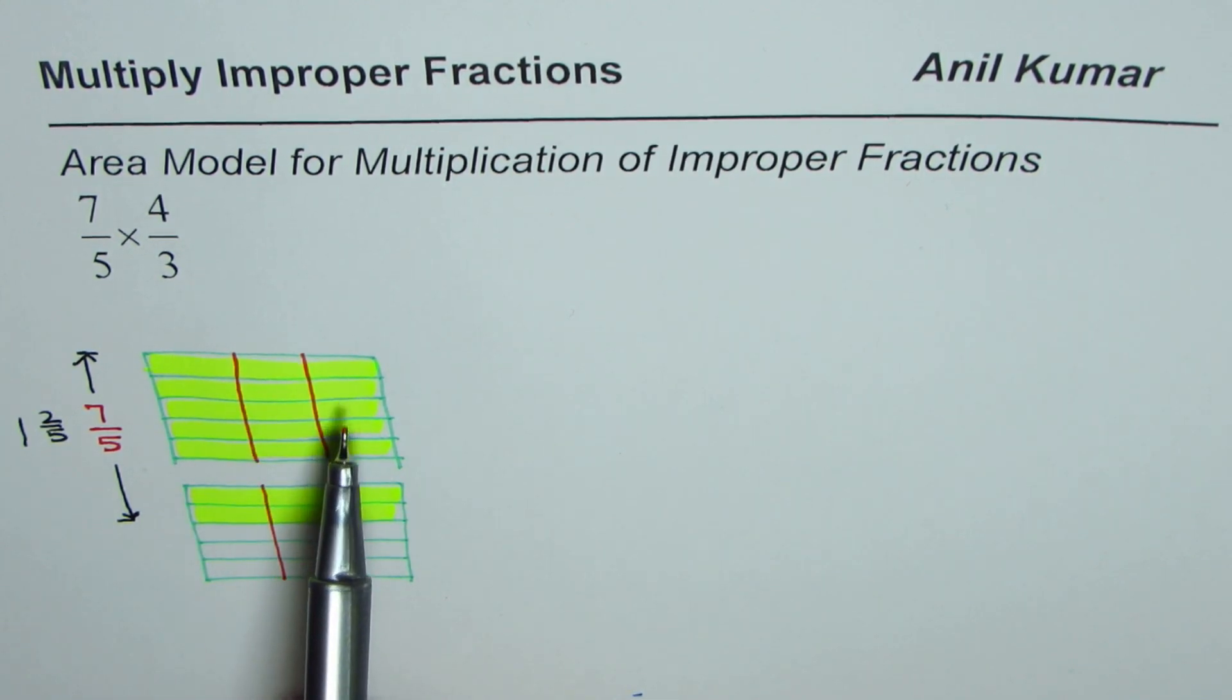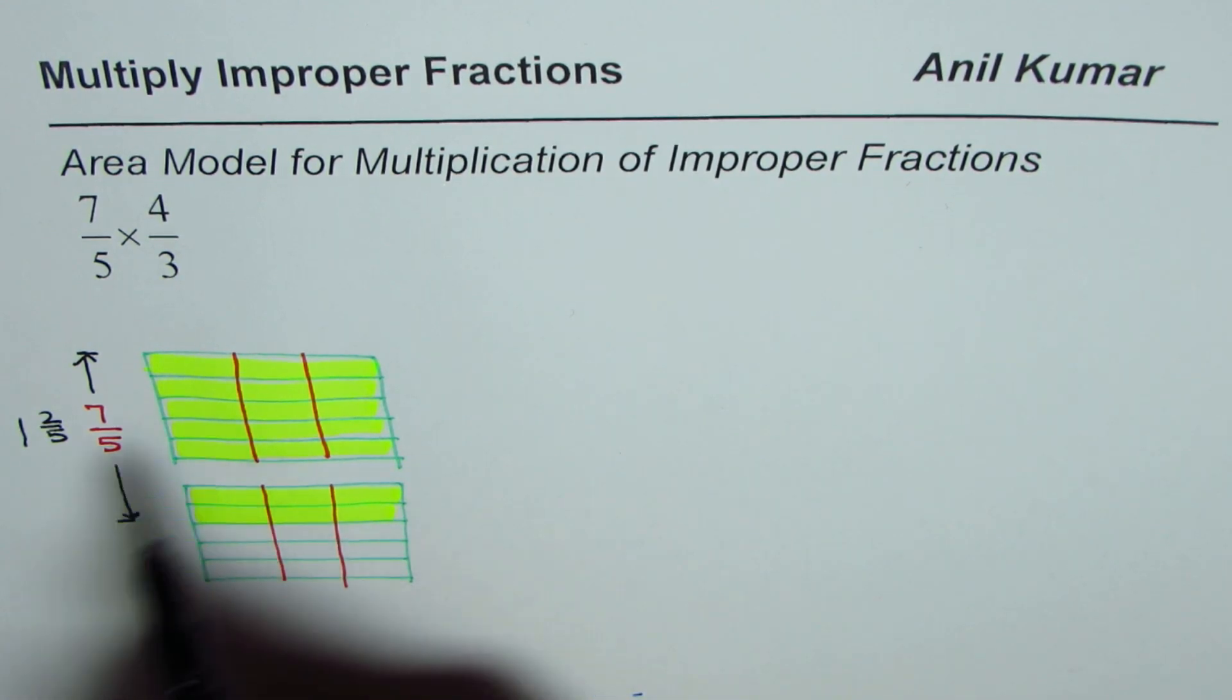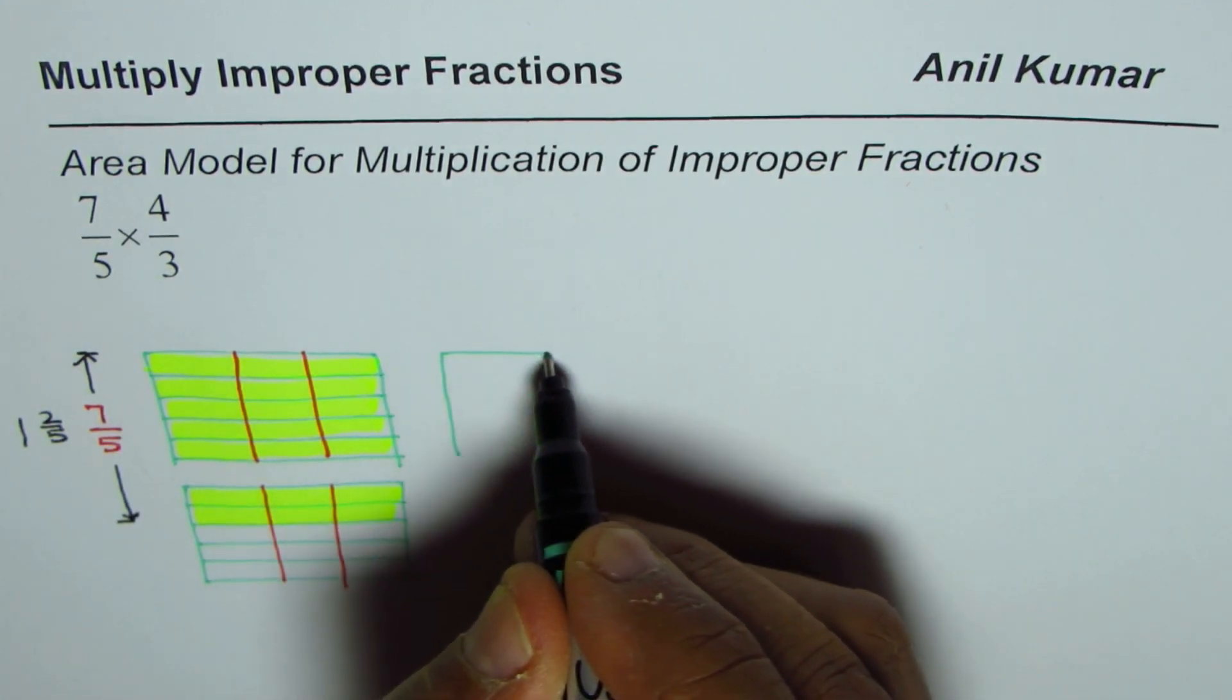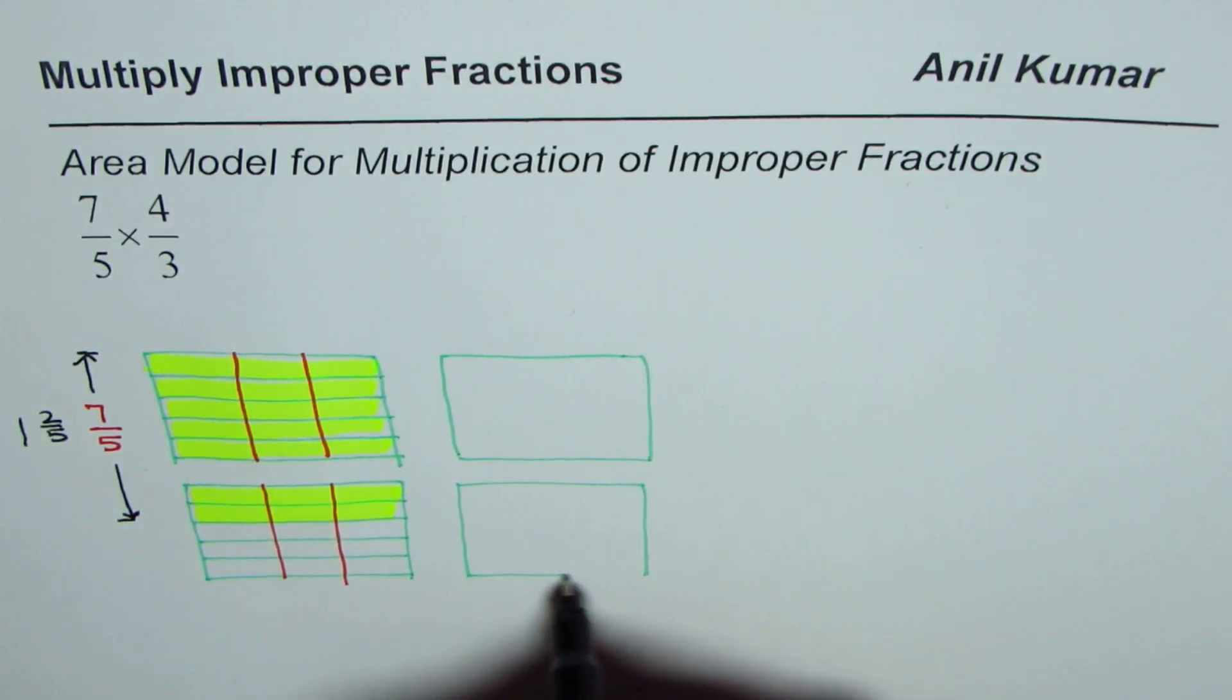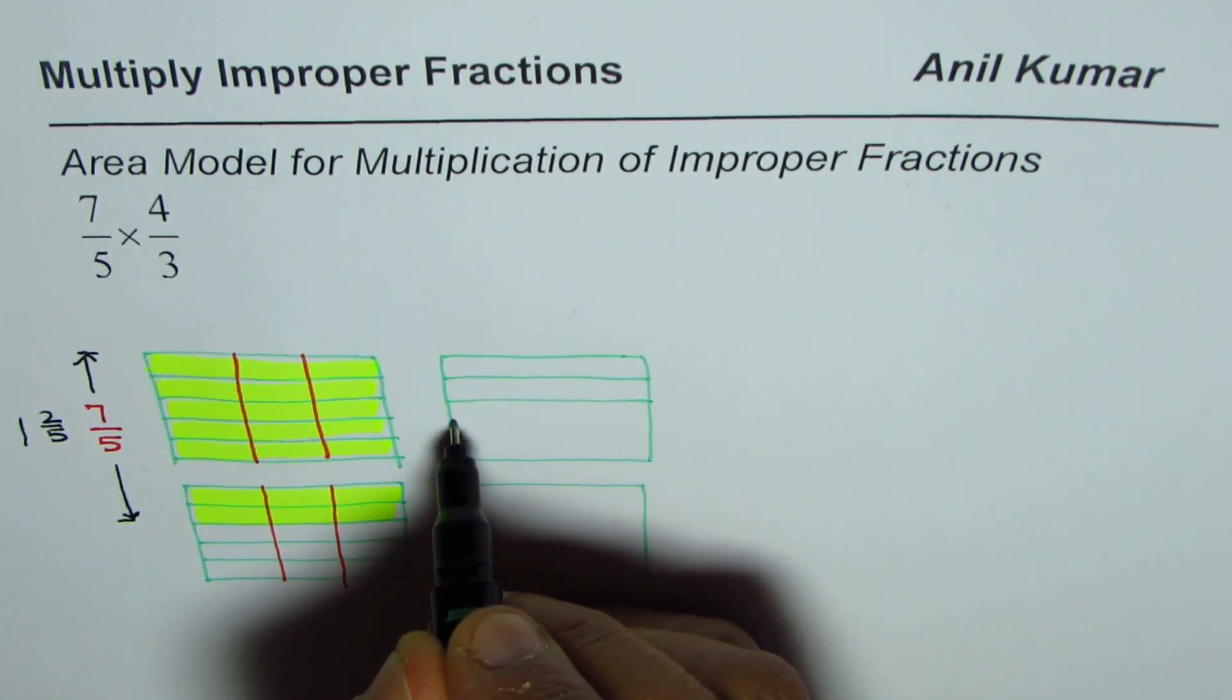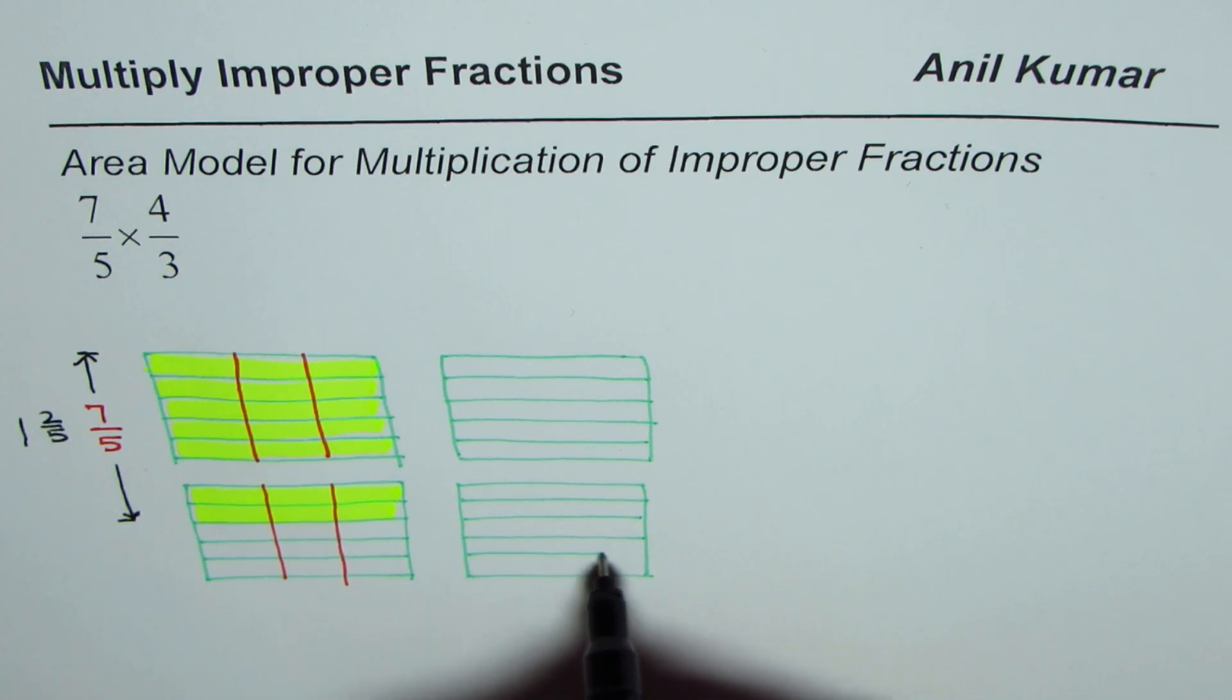Now out of these 3 equal parts, we need to select 4. How can we do it? We really cannot do it from this figure. So what we do is we copy it. So let's make a copy of this so that we can select the fourth one also. So we are just making a copy of the same. Here is the copy. So I will quickly just draw 5 parts, 5 rows. So 1, 2, 3, 4, and 5. Similarly, 1, 2, 3, 4, and 5.